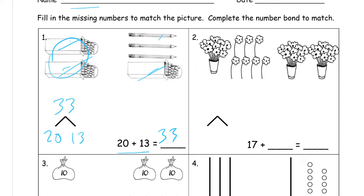So here we have two different pictures of numbers. This is going to be 10 and 1, 2, 3, 4, 5, 6, 7, so that's 17.